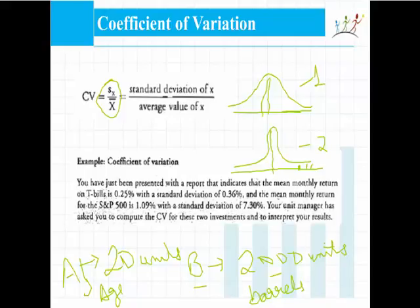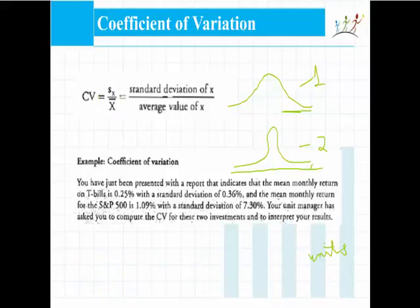You have been presented with a report indicating that the mean monthly return on T-bills is 0.25% with a standard deviation of 0.36%, and the mean monthly return for the S&P 500 is 1.09% with a standard deviation of 7.3%. Your unit manager has asked you to compute the CV for both investments and interpret the results. For T-bills, the standard deviation is 0.36 and the mean is 0.25, so the coefficient of variation is 1.44.